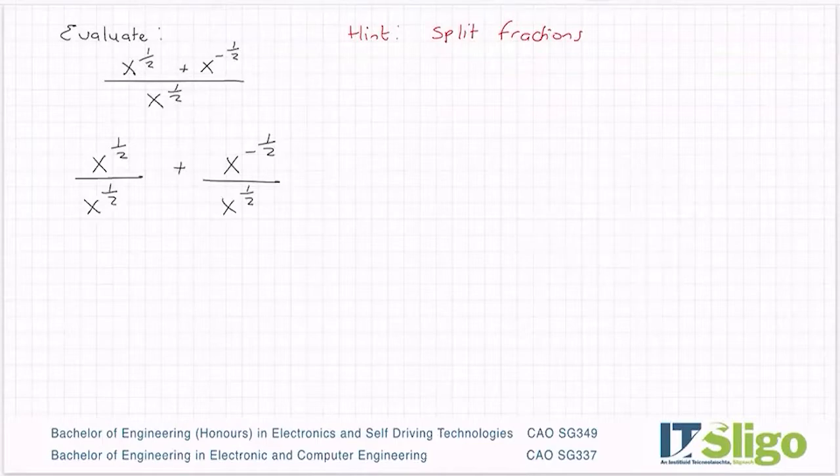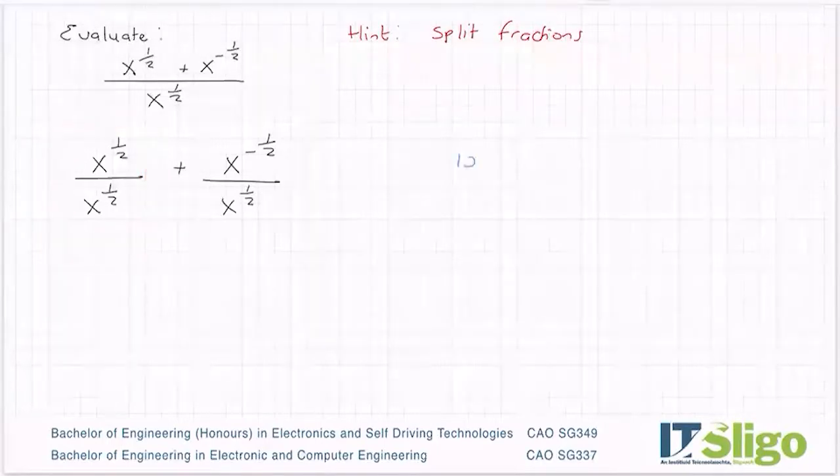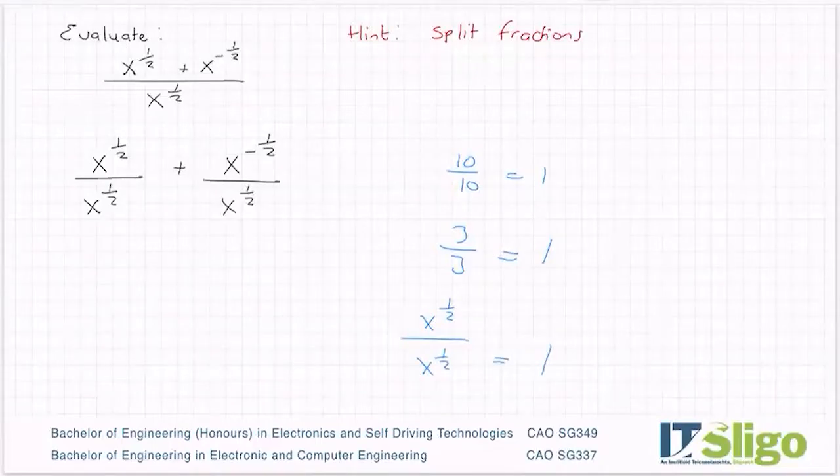I'm not doing something magical here, I'm literally just rewriting it differently, splitting it over its own fraction. Anything over itself, as you can see in this first part here, anything over itself is one. Well, x to the power of a half over x to the power of a half would also be one.